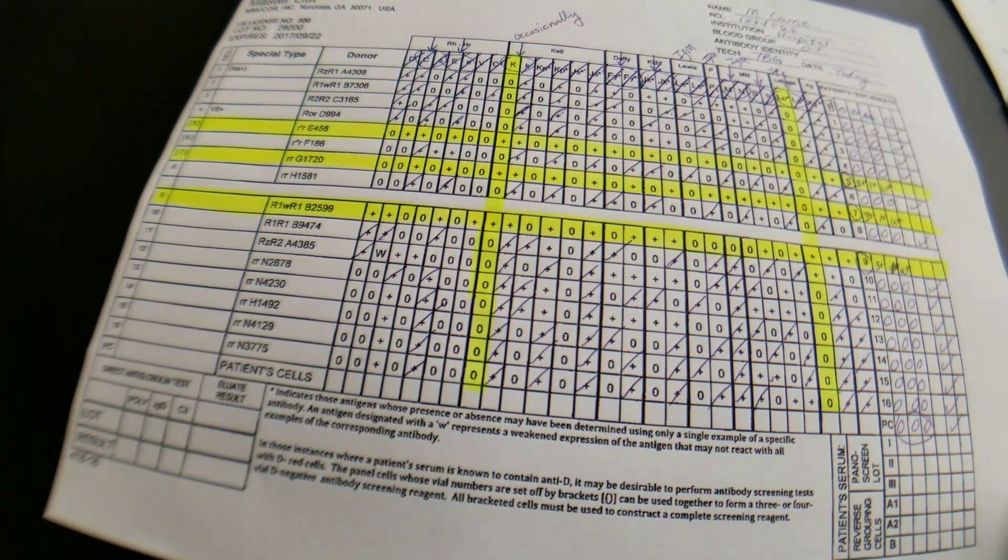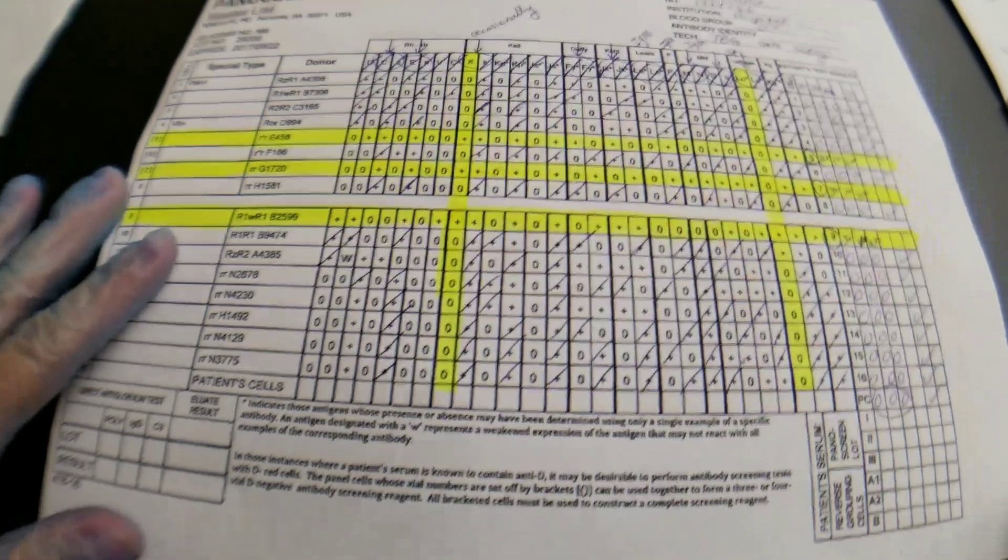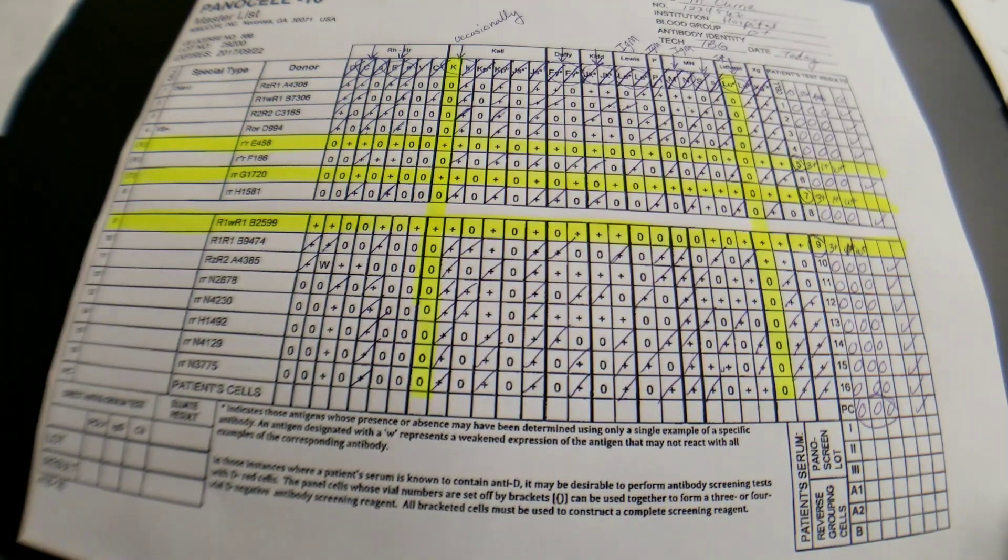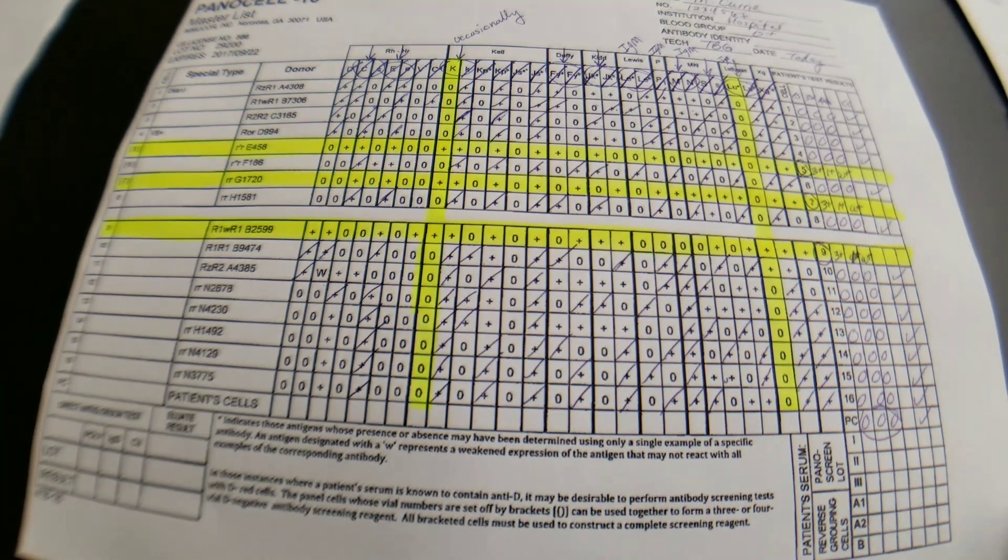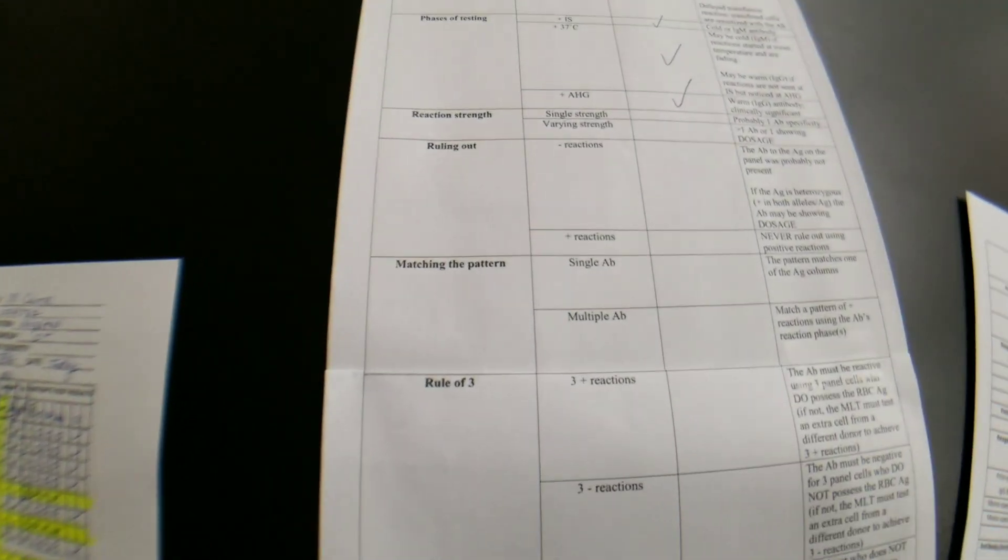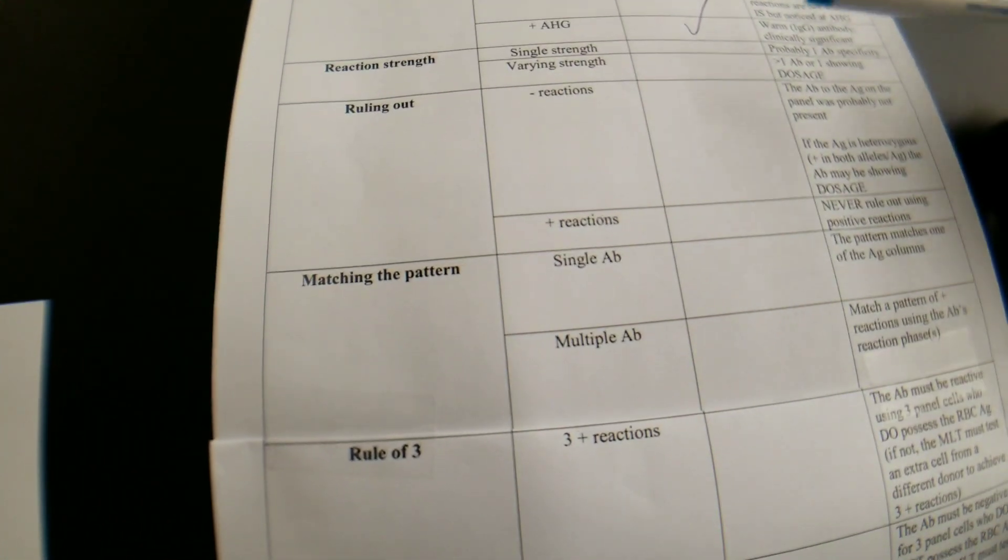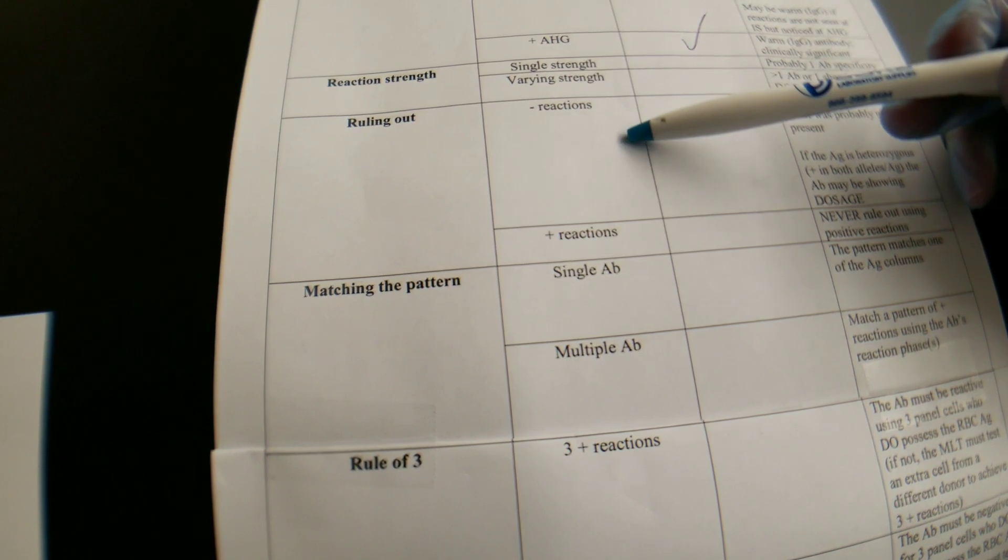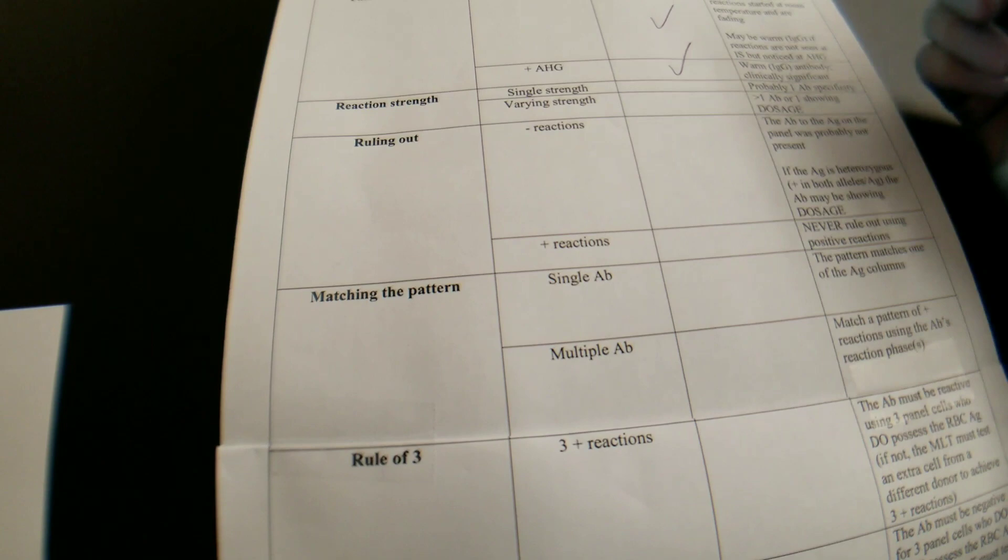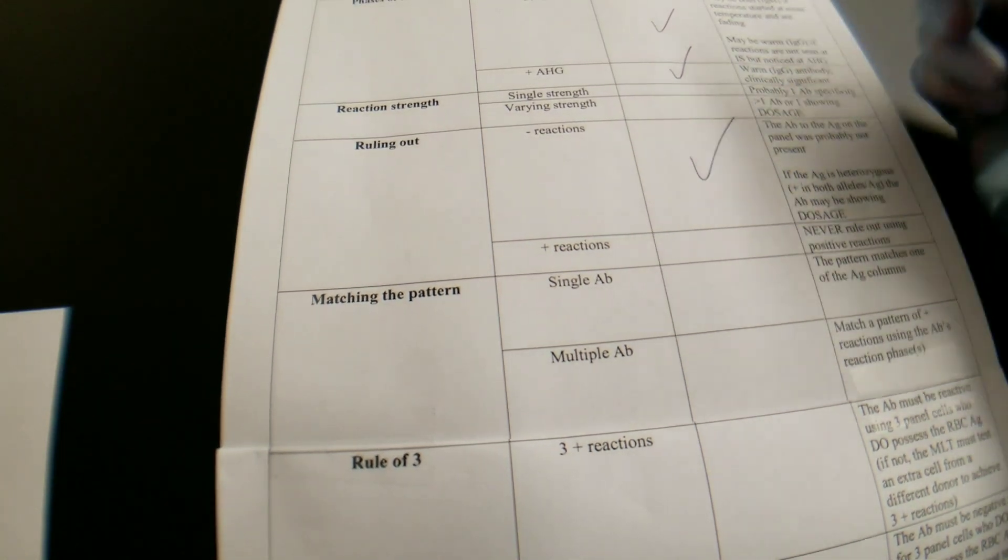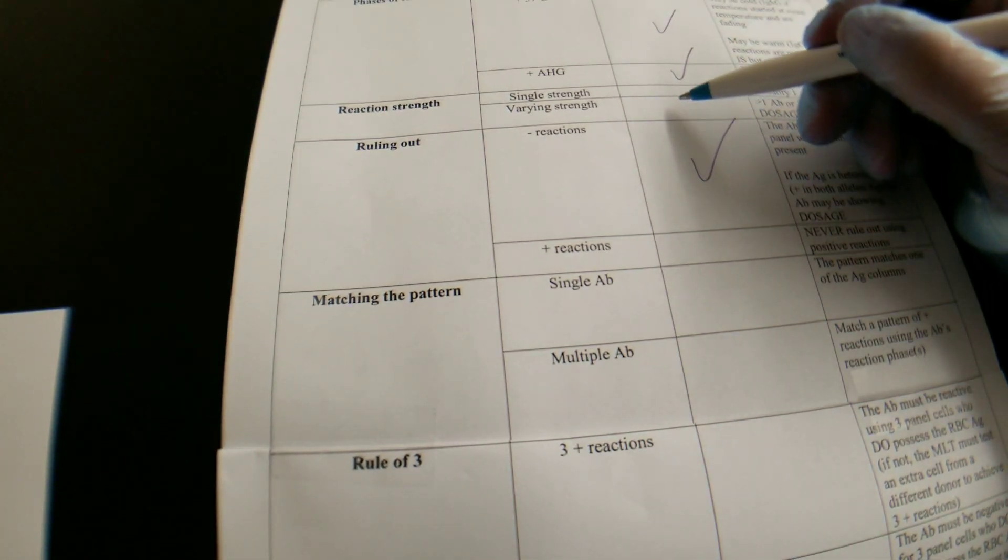Okay, so I went through and I did it vertically and I highlighted the two that we could not cross off. All right, so the next thing that we're going to do is try to figure out what it is that we have. So far, we went through and we ruled out the negative reactions. So, check we did that.